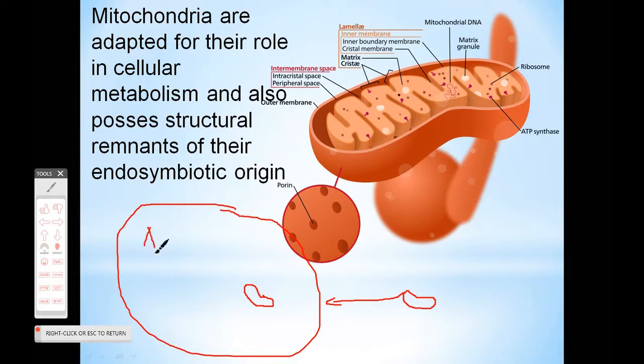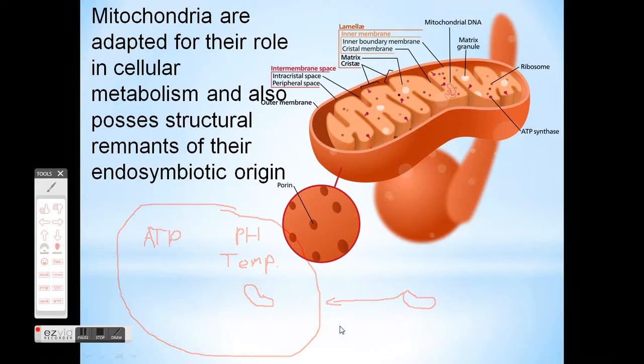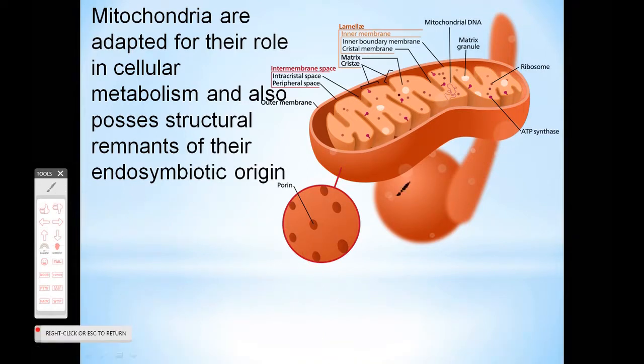The big cell gets energy and is happy. But what does the mitochondria get? The big cell provides constant pH, constant temperature, and a great homeostatic environment - a very stable, constant environment for the mitochondria to live in. Over time, they became one. The second piece of evidence that the mitochondria was once its own separate cell is that it has its own unique mitochondrial DNA. Not in a nucleus, just floating around - its own circular DNA. Coincidence? Probably not. That's why it's called the endosymbiotic theory.